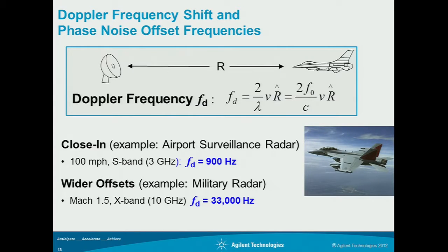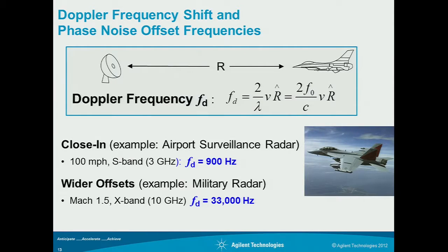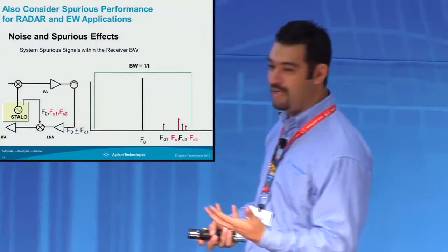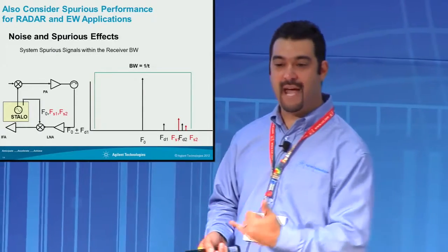If you're working on military applications, maybe you're looking at Mach 1.5 at X band — maybe it's the 33 kilohertz offset in this case. So now you're starting to define where it matters to you. The next step would be to consider other effects. A lot of synthesized signal generators have fractional-N loops, and those inject spurs of a random nature, so you're going to want to choose a signal generator that's not going to impact your system.